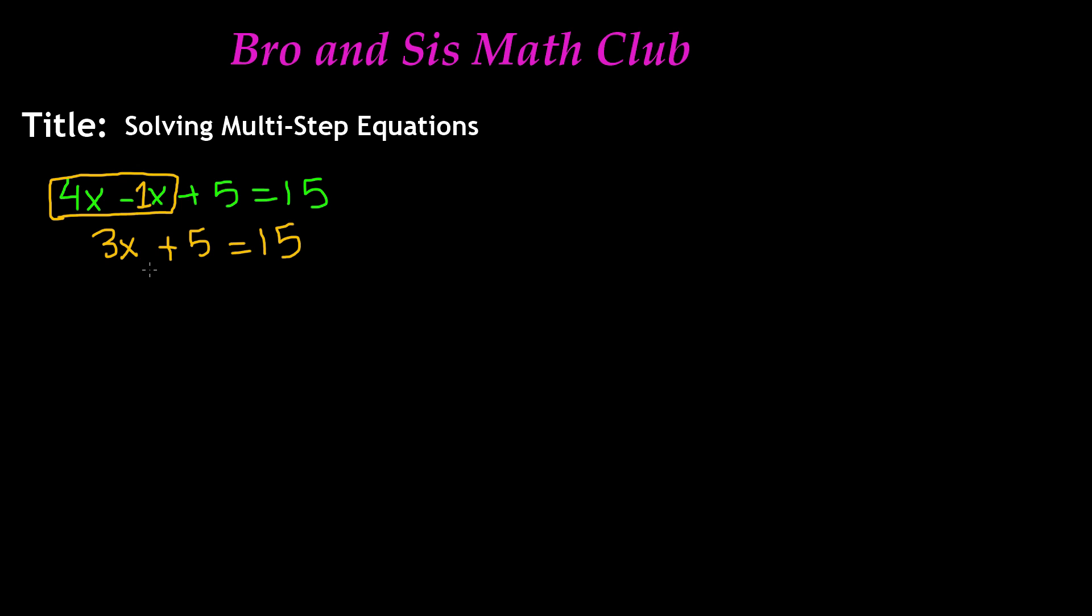In this case, 3x is being added to 5. So if you want to get rid of the 5, you have to do minus 5. And remember that whatever you do to this side, you have to do to the other side. So if you do minus 5 on both sides, we know that positive 5 and negative 5 cancel each other out, and so therefore, we're left with 3x is equal to 15 minus 5, which is 10.